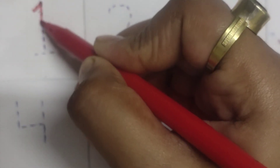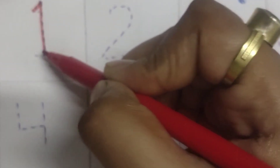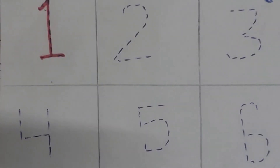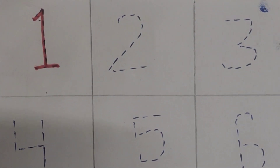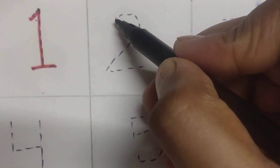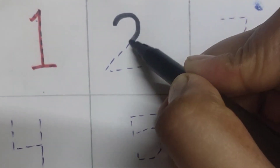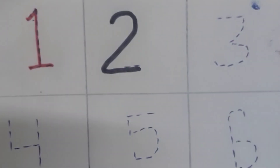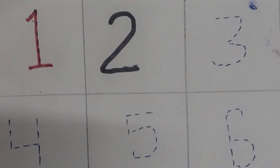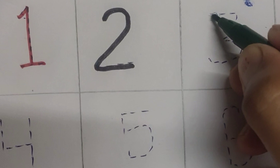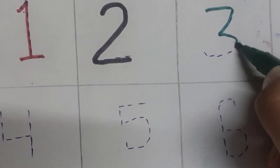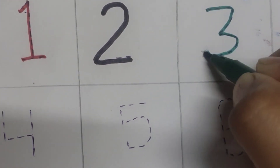One — one means egg. Two — two means dough. Three — three means tin.